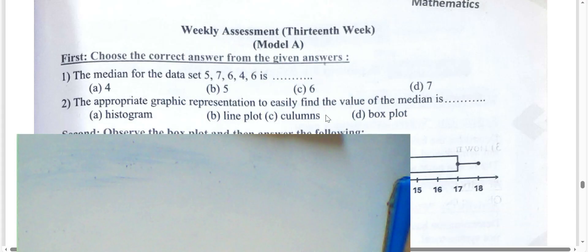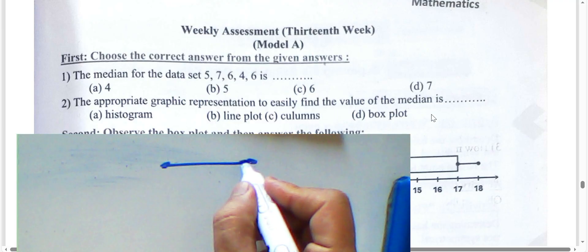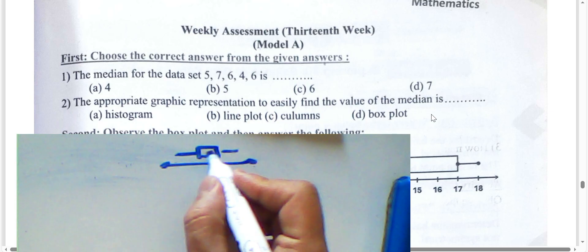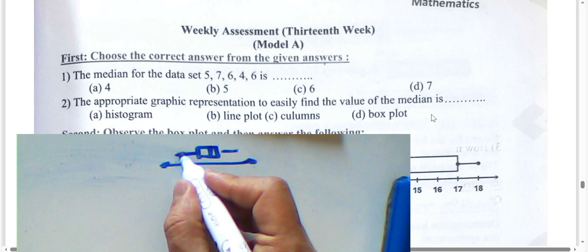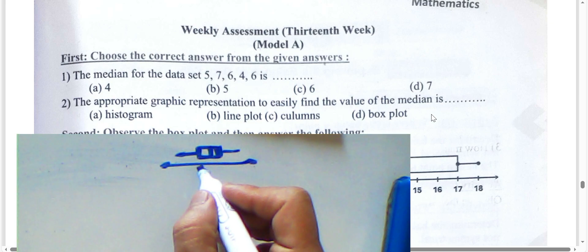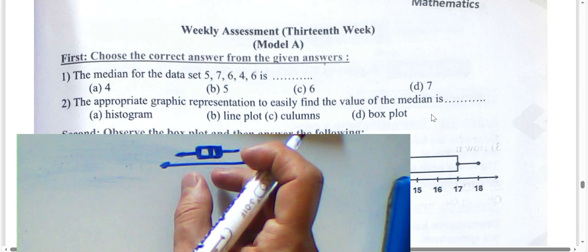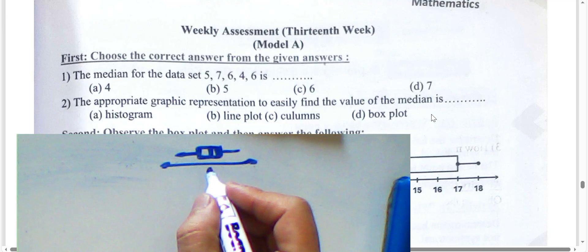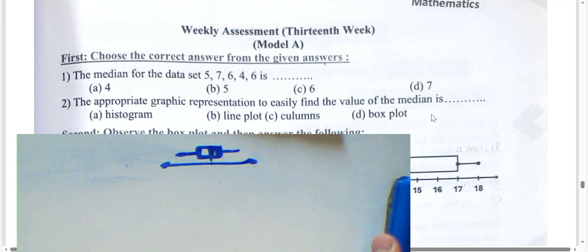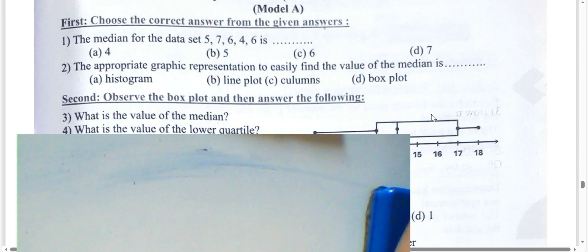Next question: which graph is used to easily find the value of the median? We use the box plot, letter D. The box plot is used to find the median, and it also shows the minimum, maximum, quarter one, quarter three, and the median. It is an easy method to find the median.